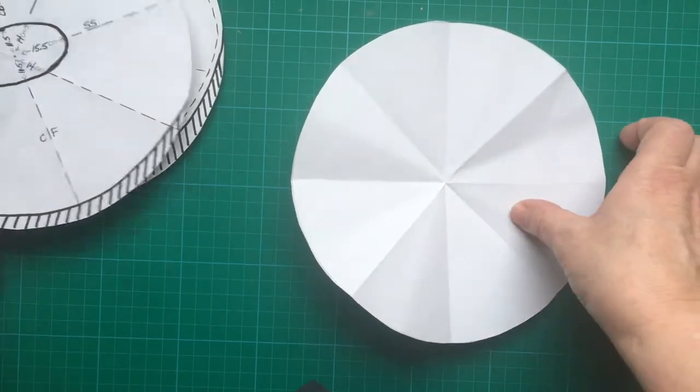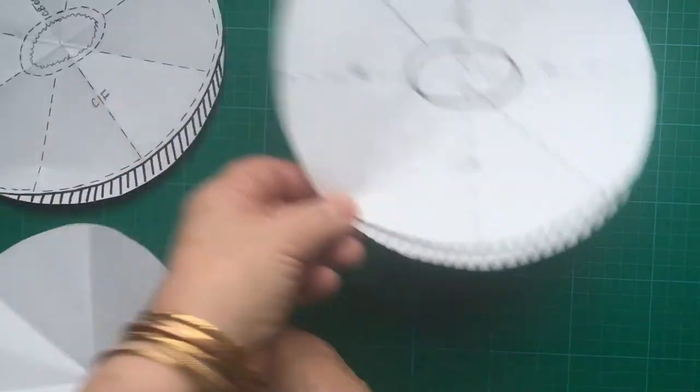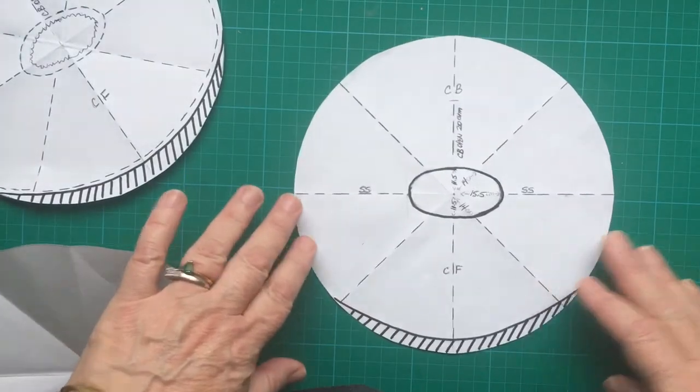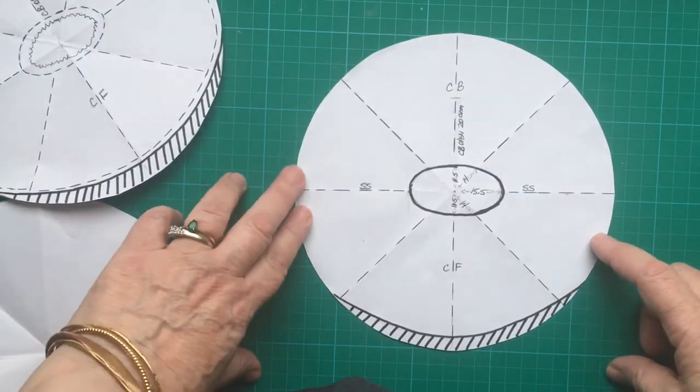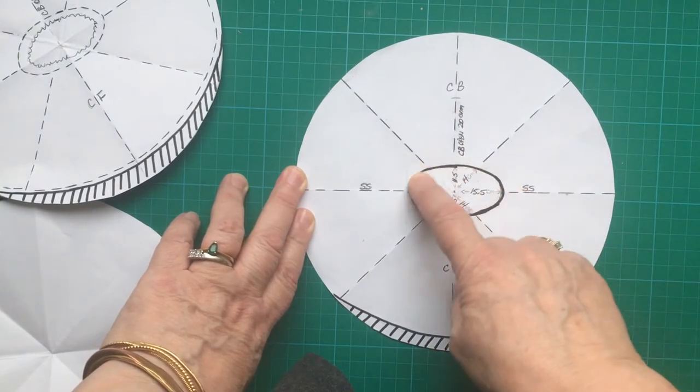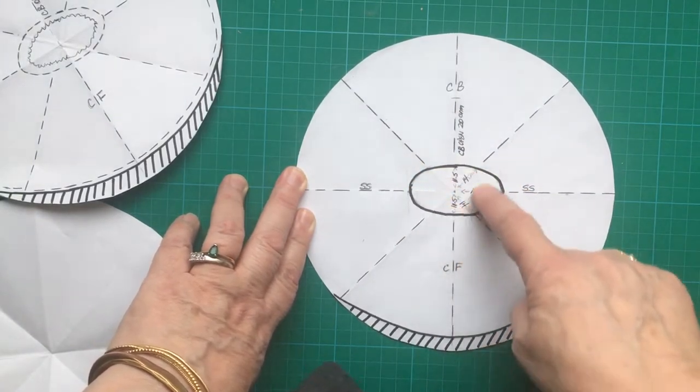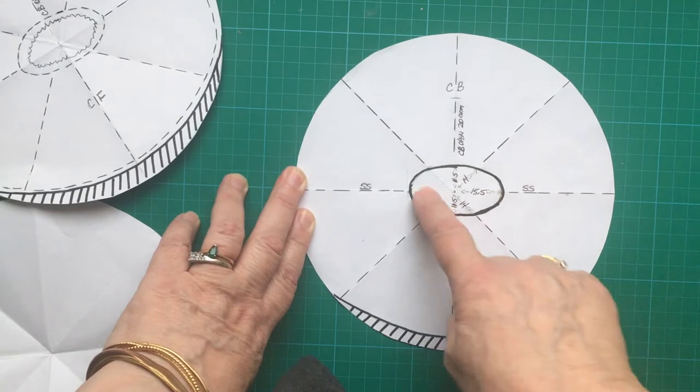Once you've done that, mark them up. You want to cut out where your body is and your body is not a circle, your body is an oval shape.